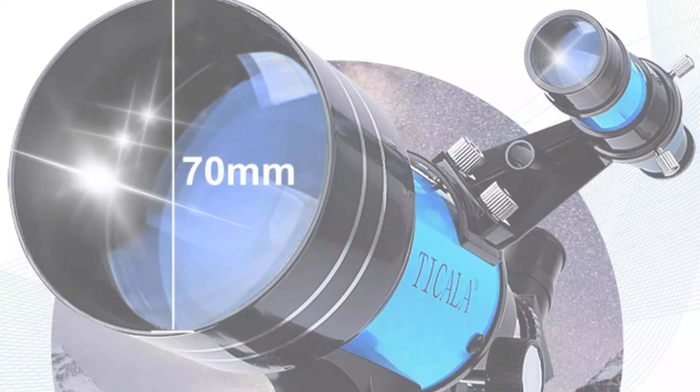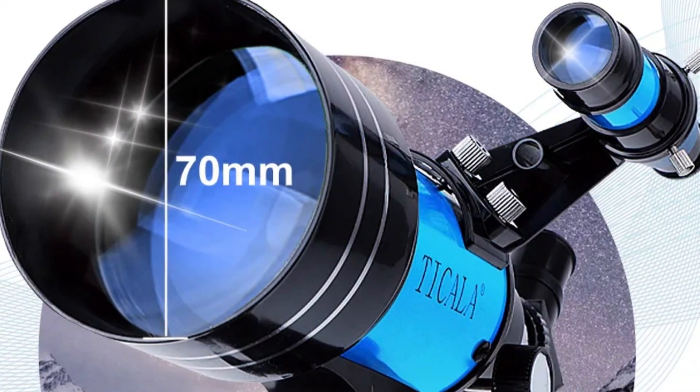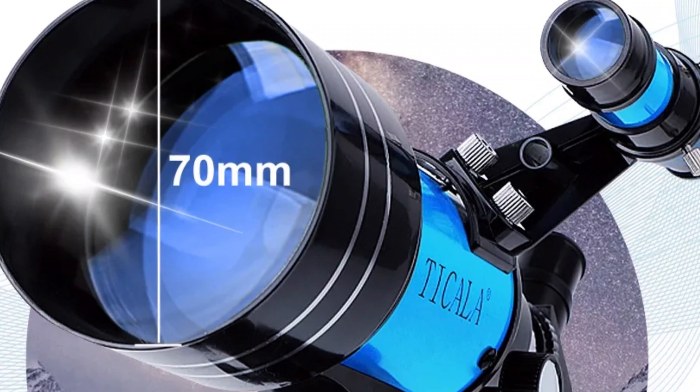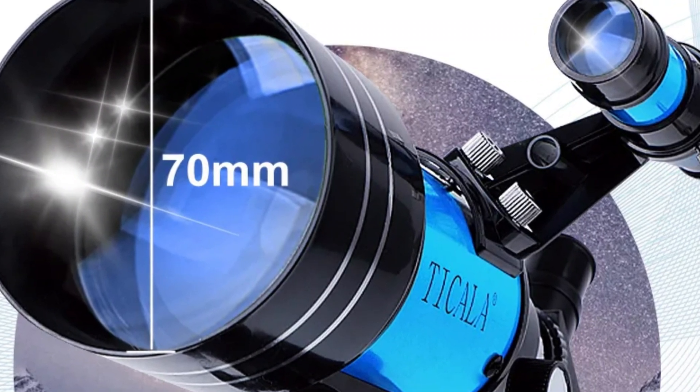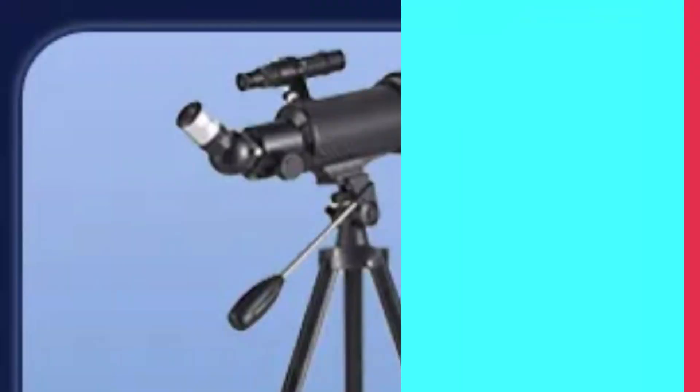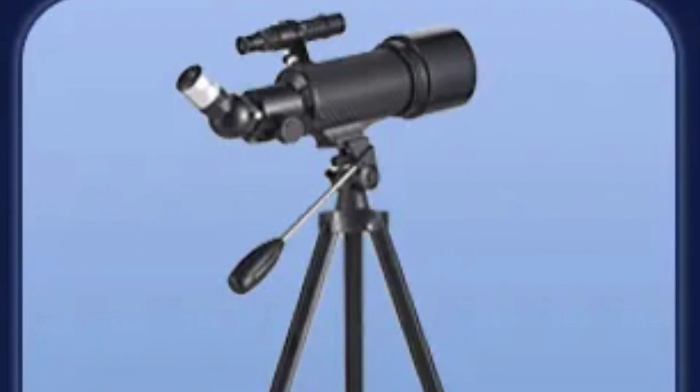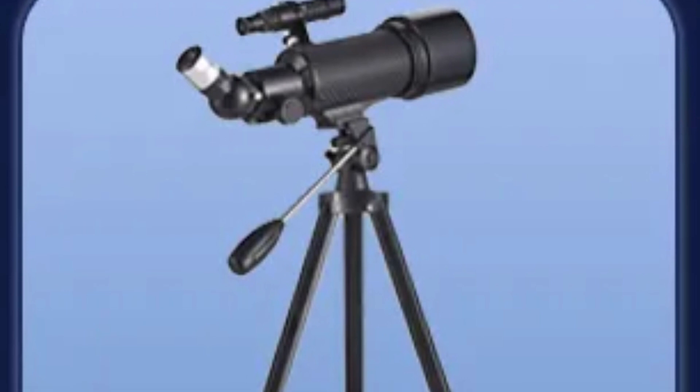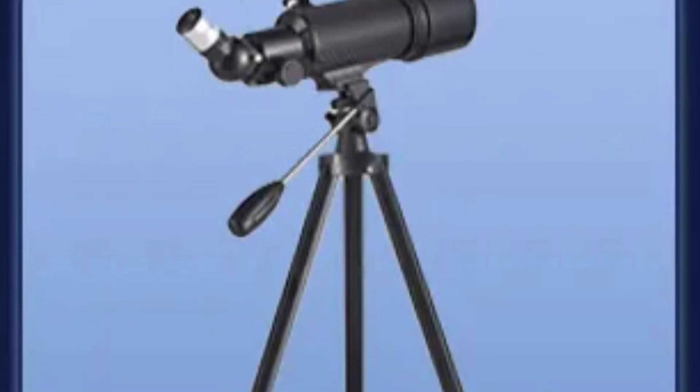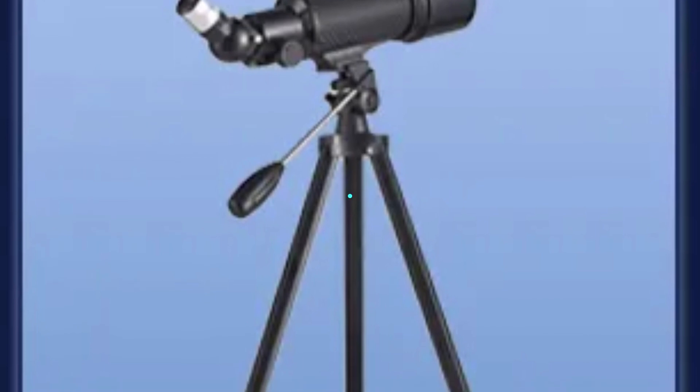The 5x24 optical finder scope simplifies locating celestial objects, while the 1.5x and 3x Barlow lenses provide further magnification. The telescope's 48-degree zenith mirror provides comfortable viewing angles and is securely mounted on an adjustable aluminum alloy tripod. The Ticala 30,070 offers exceptional performance across various astronomical activities, making it accessible to both beginners and experienced astronomers.